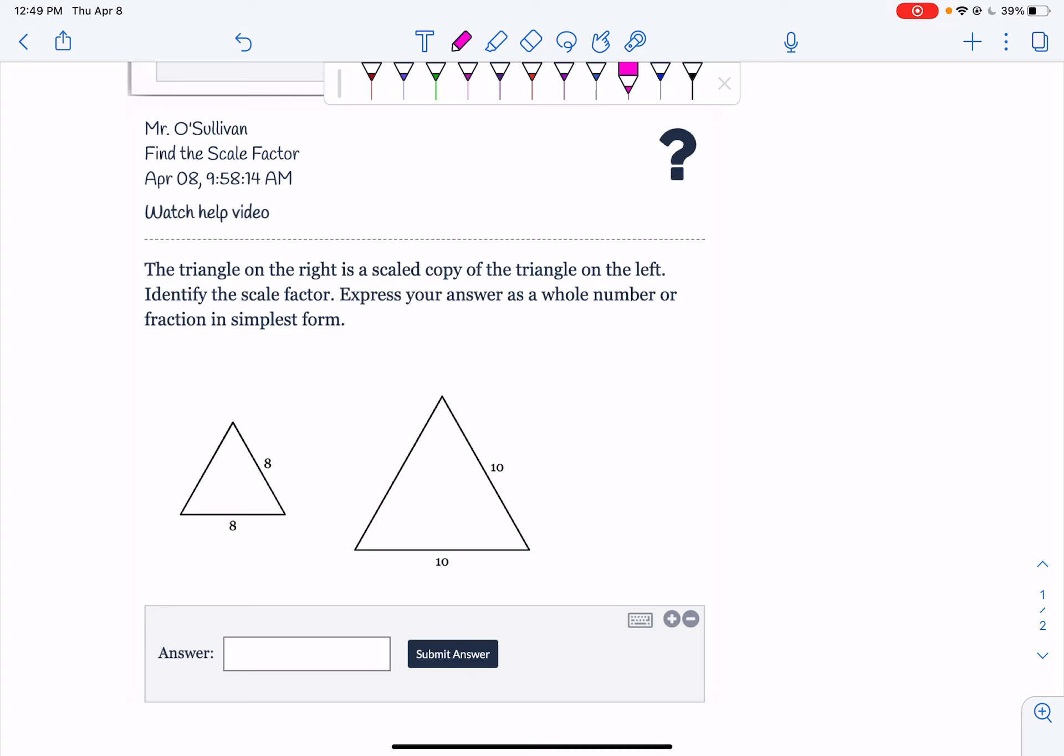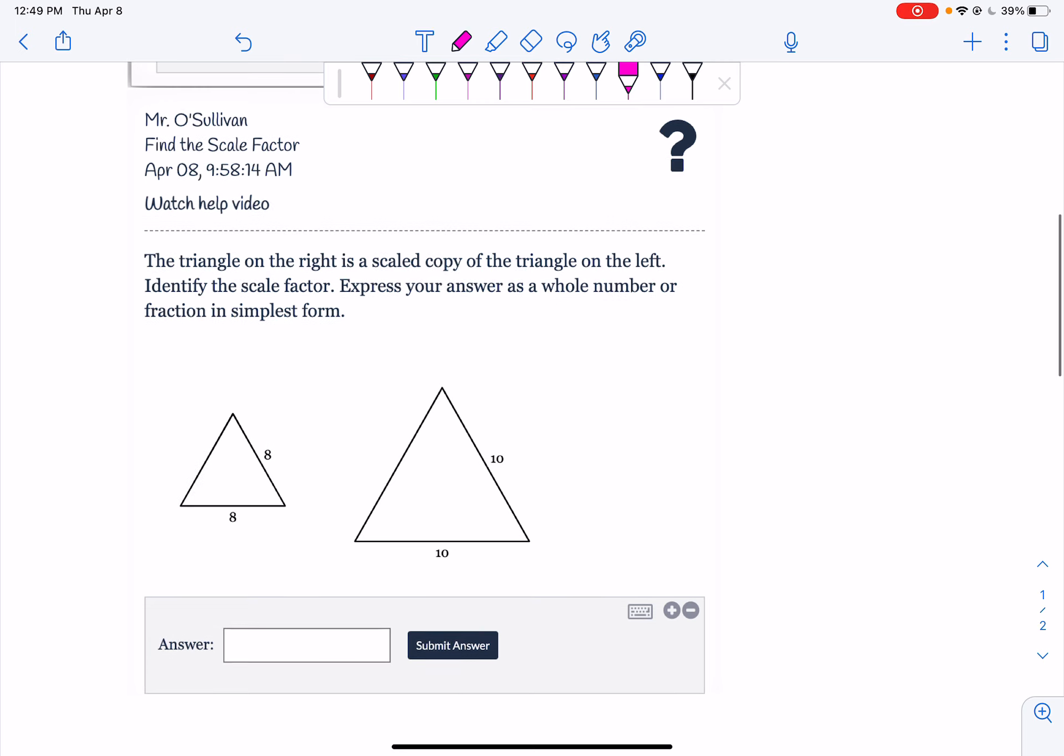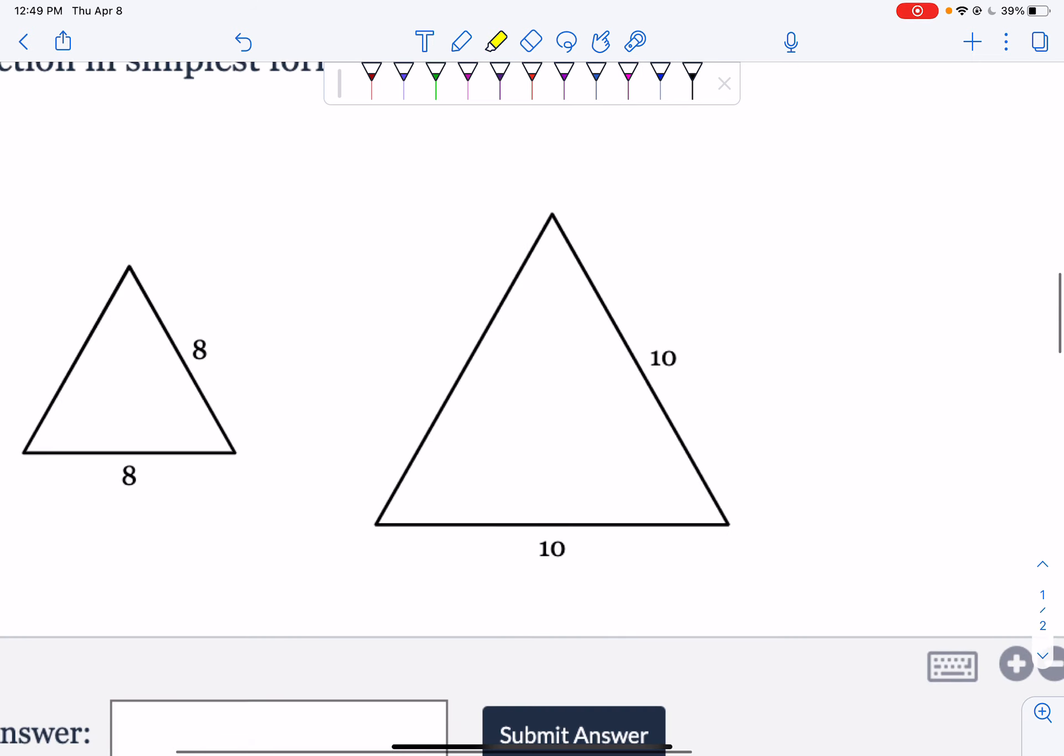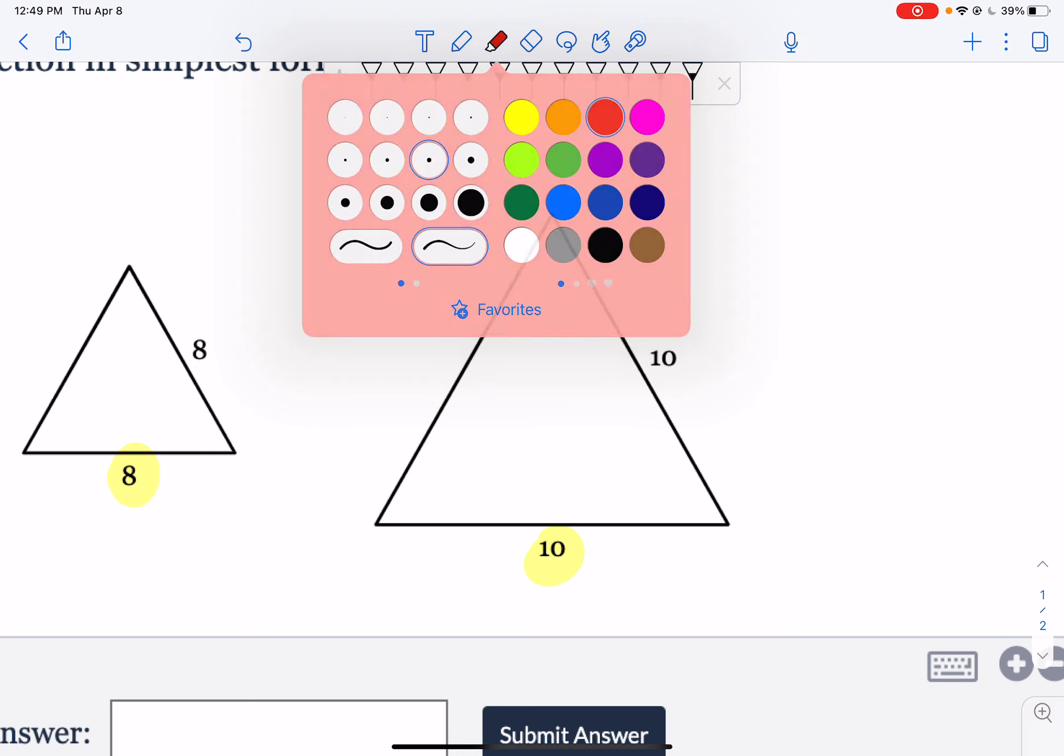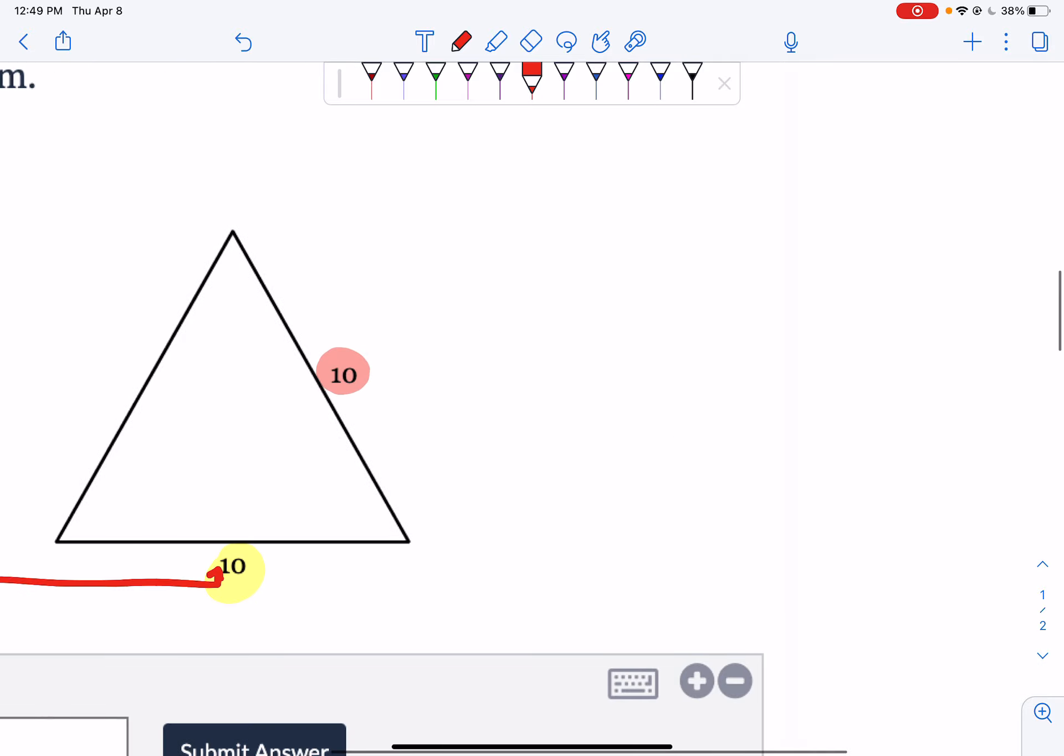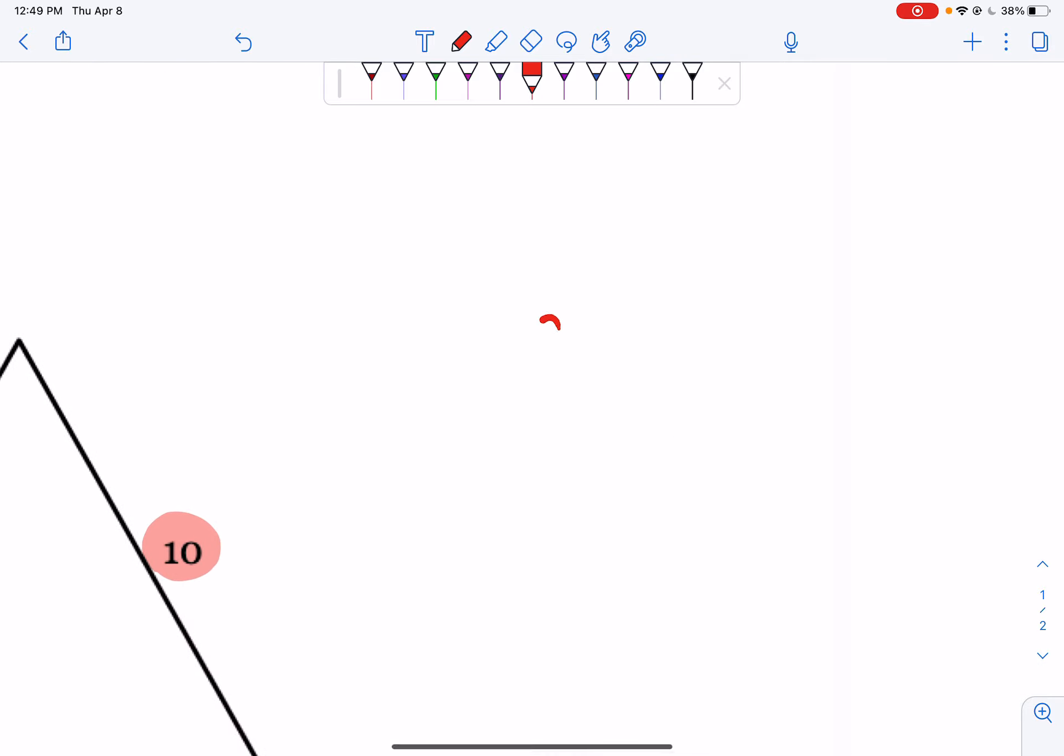A majority of these examples for this section are going to have a fraction as your answer. So all you really do is you just look to see what lines up with what. If I look, my 8 lines up with my 10. My 8 lines up with my 10. So this is a little annoying because they're both the same numbers. So I can really only use one equation. But I need to know what I multiply my 8 by to get to a 10.